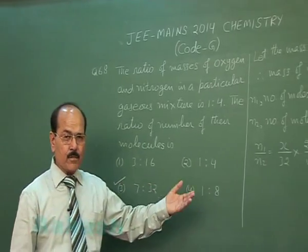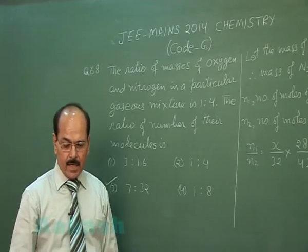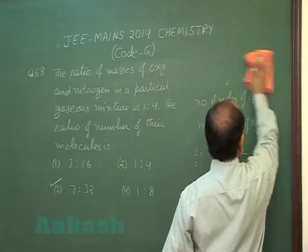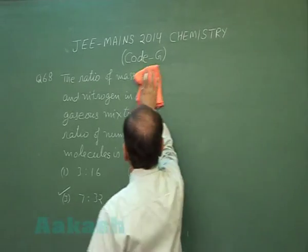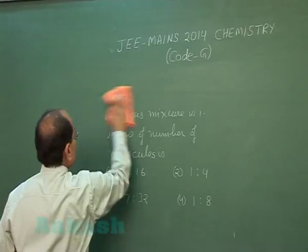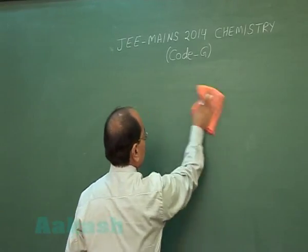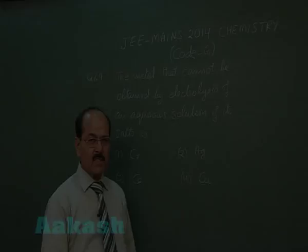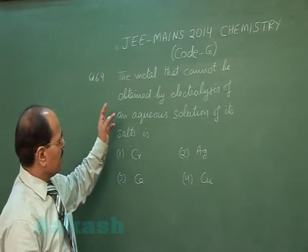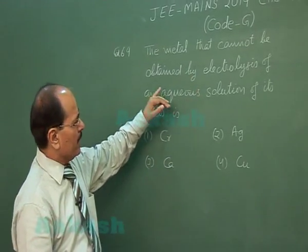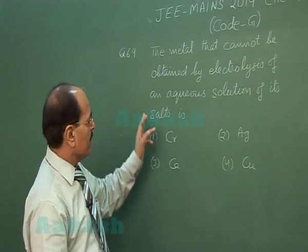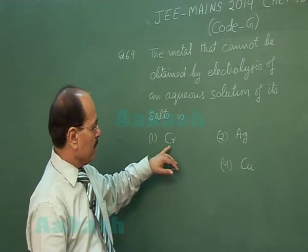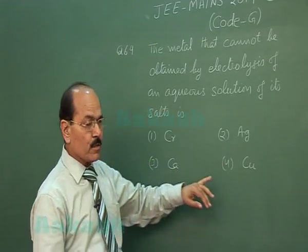Now we will discuss the next question, that is question number 69. Question number 69 says the metal that cannot be obtained by electrolysis of an aqueous solution of its salts is. Four options are given: chromium, silver, calcium, copper.